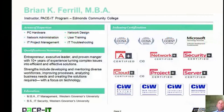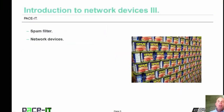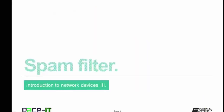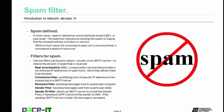Hello, I'm Brian Farrell, and welcome to PACE IT's session on Introduction to Network Devices Part 3. Today I'm going to be talking about spam filters, and then we're going to conclude with a brief discussion on some network devices. Spam is defined as unsolicited bulk email, or UBE, sometimes called junk mail. The spammer is hoping that the recipient will buy a product or service.